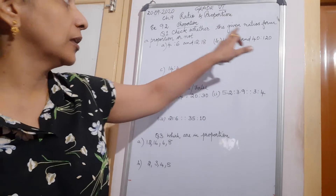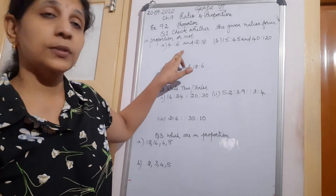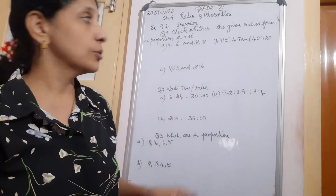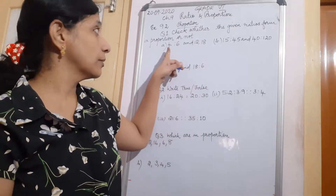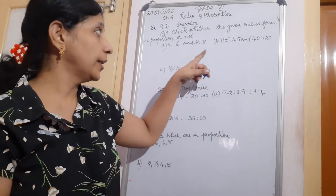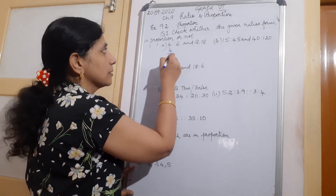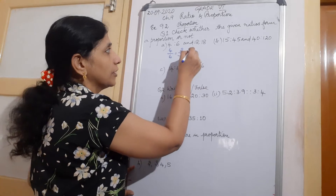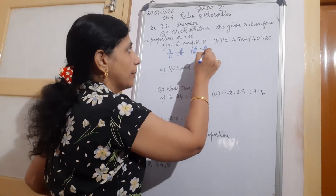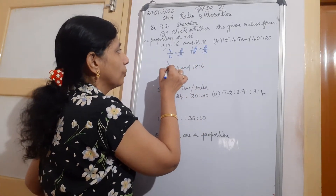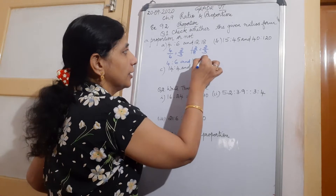The first question is: check whether the given ratios form a proportion or not. How will you check? The first question gives ratios 4:6 and 12:18. If both fractions are equal in simplest form, they are in proportion. So 4 upon 6 is 2 by 3, and 12 upon 18 is also 2 upon 3. So 4:6 and 12:18 are in proportion.